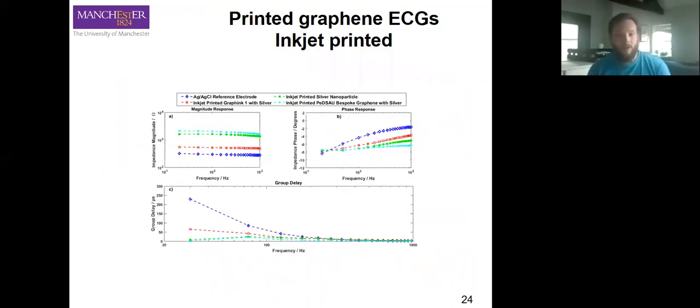If we compare the group delay, magnitude response, and phase response, we also see similar behavior, but the group delay for our inkjet printed graphene is considerably lower.